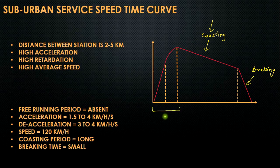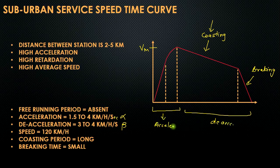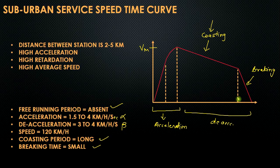Electric locomotives in suburban services must also have very high acceleration, so the duration required to reach maximum speed Vm should be very small. We represent acceleration with alpha and deceleration with beta. The acceleration period is 1.5 to 4 km per hour per second, and the deceleration period is 3 to 4 km per hour per second. The free running period is absent. The coasting period is longer and the braking time is smaller.